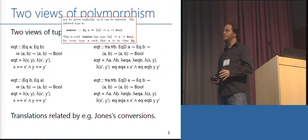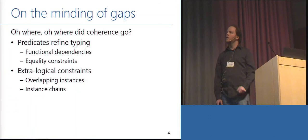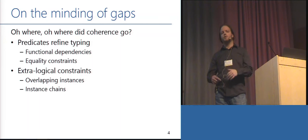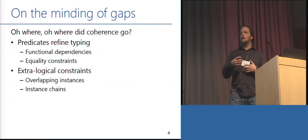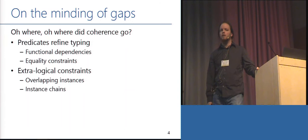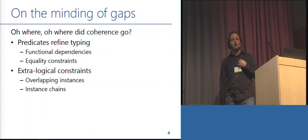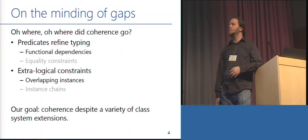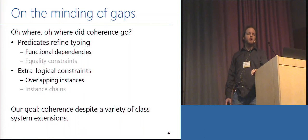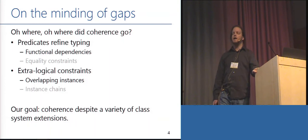So we have this great situation: an implicitly typed world, we can translate it to a world of explicit types, and we can show that these translations are coherent. So what is my talk about? The point is that since then, there have been various proposals to extend the type class system — things like functional dependencies or equality constraints, overlapping instances or instance chains — where the predicates start to give us additional information beyond simple restriction on type instantiation. When we do this, we lose the coherence properties that made the earlier translations make sense. The goal of this talk is to develop a semantics that has coherence despite these class system extensions.